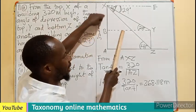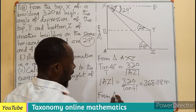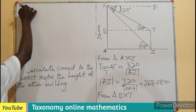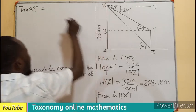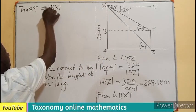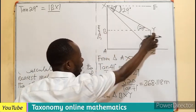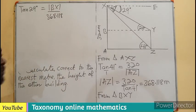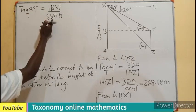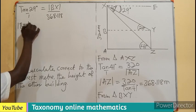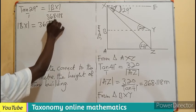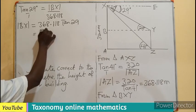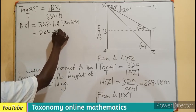From triangle BXY, we use: tan 29 equals the opposite side BX divided by the adjacent side BY, which is the same as AZ — 368.118 meters. By cross-multiplication, the length BX equals 368.118 times tan 29, which gives us 204.051 meters.